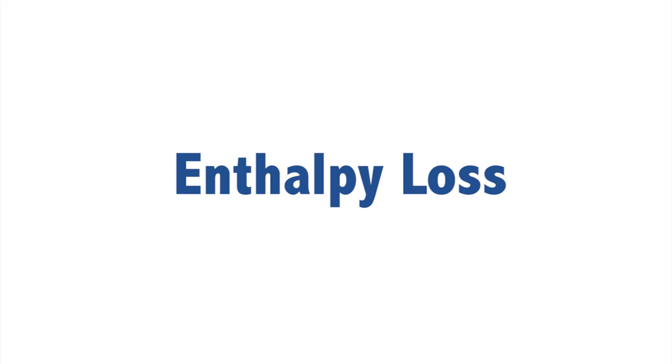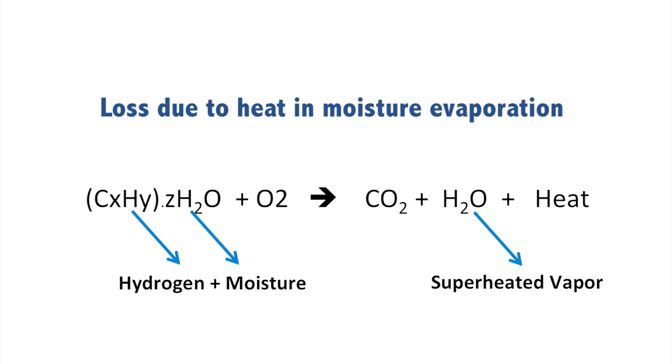Now we come to the third kind of loss, which is the enthalpy loss. Hydrogen is an integral part of almost every kind of fuel. When this hydrogen in the fuel combines with the oxygen present in the combustion air, it forms H₂O. This H₂O uses the heat generated in combustion to vaporize itself. Additionally, there is some amount of moisture present in the fuel, which enters the combustion process in liquid form and goes out of the stack along with the flue gases in vapor form. The heat used by the H₂O to vaporize itself and exit via the stack at the temperature of the flue gases is basically the enthalpy loss.